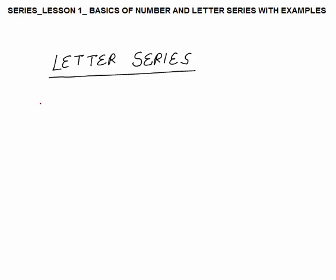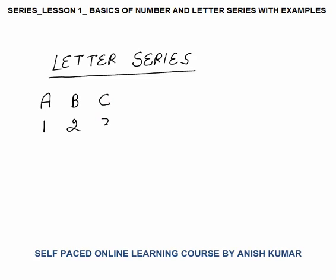In letter series, we assign numbers to alphabets: A is the first alphabet so A equals 1, B equals 2, C equals 3, and so on — Y equals 25 and Z equals 26. This kind of question can also come in series where you will be given the series in letters, and each letter represents a number.